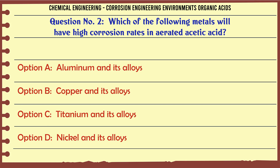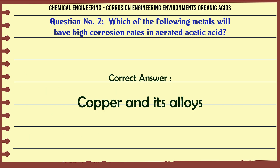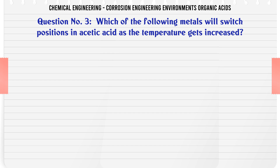Which of the following metals will have high corrosion rates in aerated acetic acid? A. Aluminum and its alloys, B. Copper and its alloys, C. Titanium and its alloys, D. Nickel and its alloys. The correct answer is Copper and its alloys.